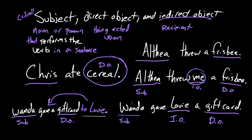So to review: the subject is the noun or pronoun that performs a verb in a sentence. The direct object is the thing that's acted upon. And the indirect object is the recipient of that direct object — it's the thing that gets the direct object. In the case of "Althea threw me a frisbee," the pronoun "me" is the indirect object. In the case of "Wanda gave Louis a gift card," Louis is the indirect object — he gets the gift card, I get the frisbee. That is subjects, direct objects, and indirect objects. You can learn anything. David out. Rosie out.